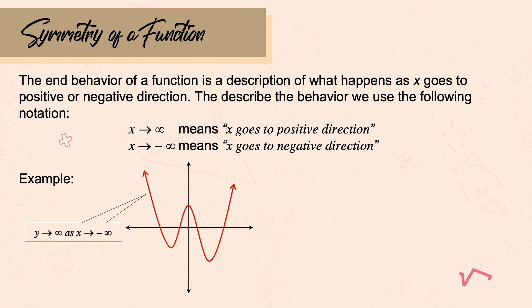That's for the left wing of the graph. Now let's have the right wing. The right wing is in the first quadrant. In the first quadrant, x is positive and y is also positive. Using this, we can come up with our end behavior: y goes to positive infinity as x goes to positive infinity. That's how you answer end behavior.